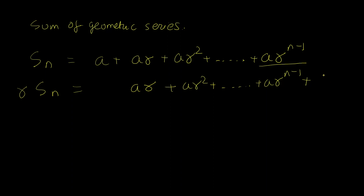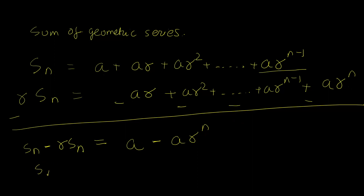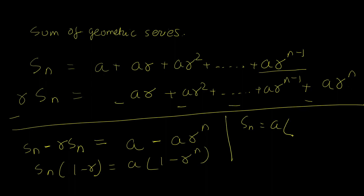Subtracting the two equations, all the middle terms cancel, leaving S_n minus r·S_n equals a minus ar^n. Factoring gives S_n(1 minus r) equals a(1 minus r^n), so the sum of a geometric series is S_n equals a times (1 minus r^n) divided by (1 minus r).